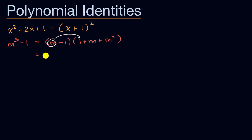So m times 1 is m. M times m is m squared. And then m times m squared is m to the third power.